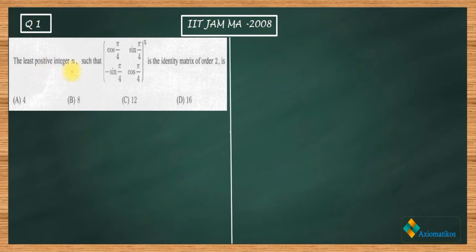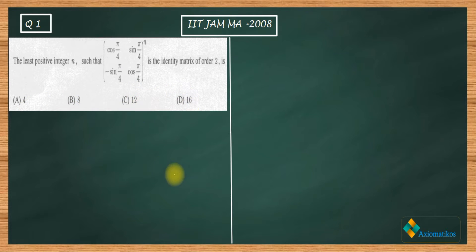The problem asks: find the least positive integer n such that a given matrix raised to the power n is the identity matrix of order 2. The four options are 4, 8, 12, and 16. You have to find out the least n for which this matrix becomes the identity matrix.